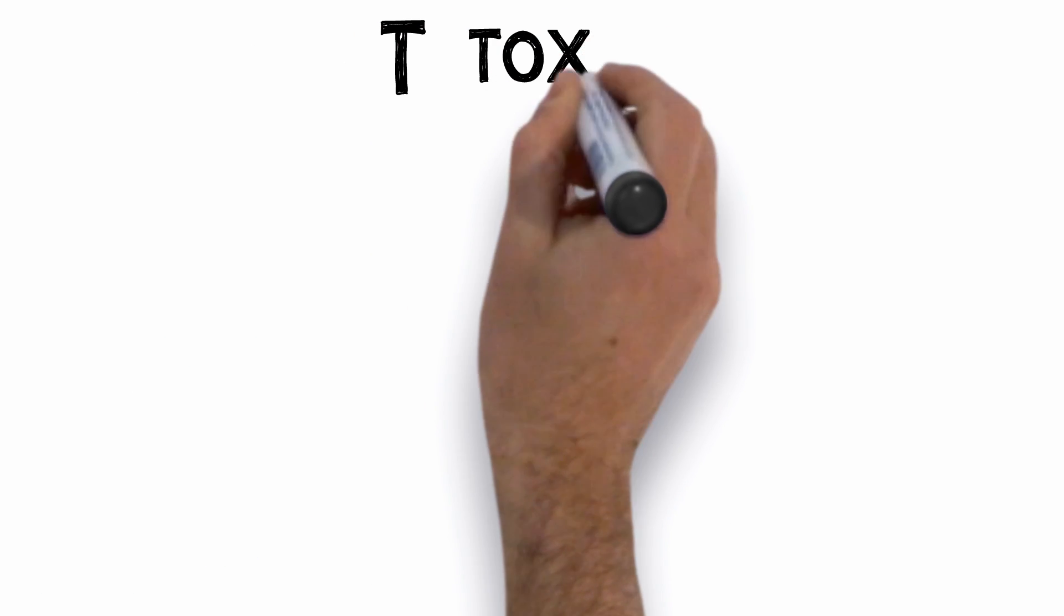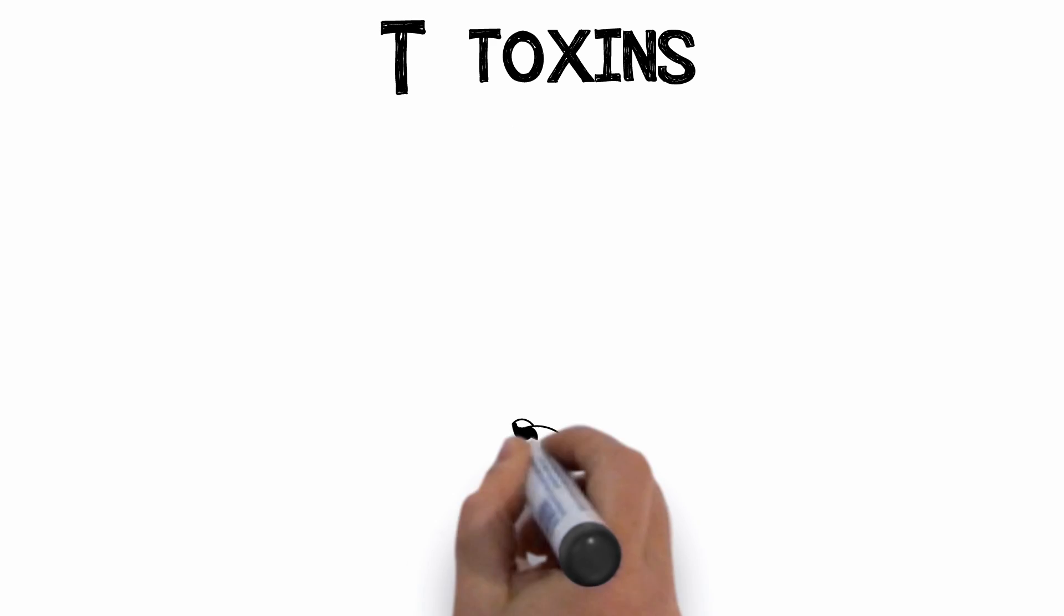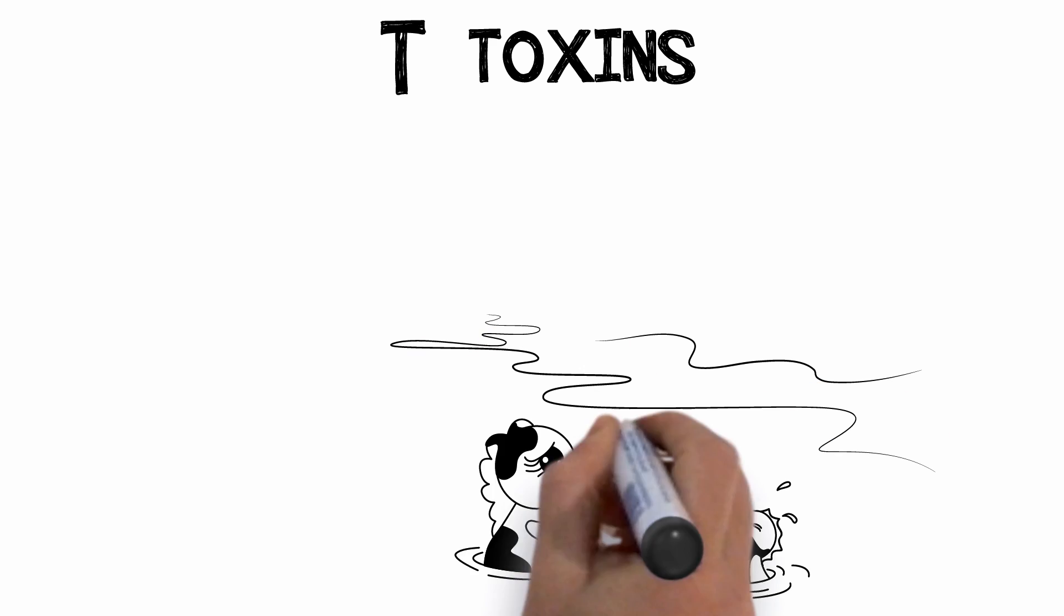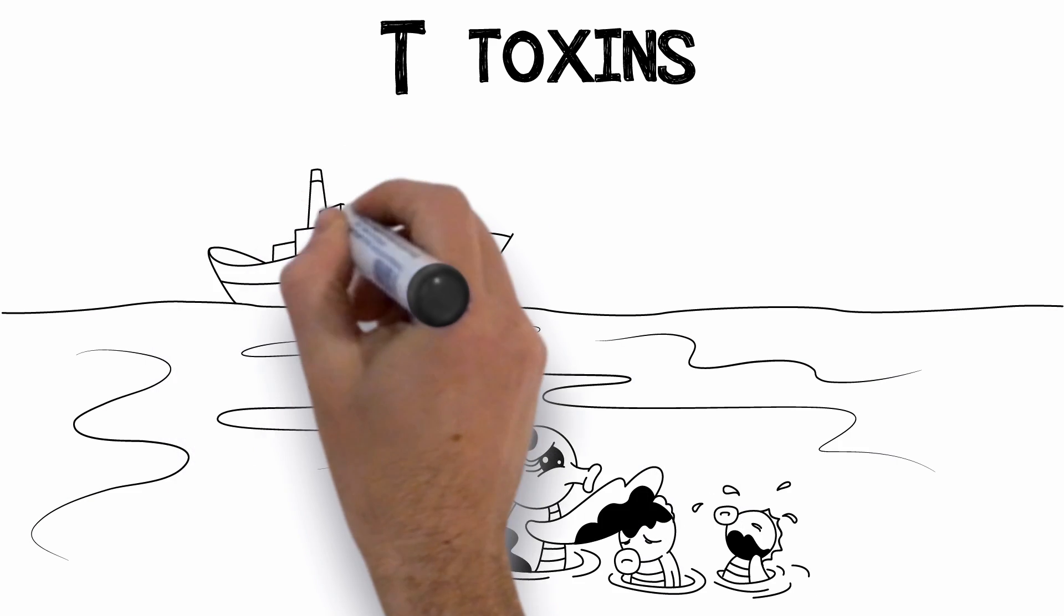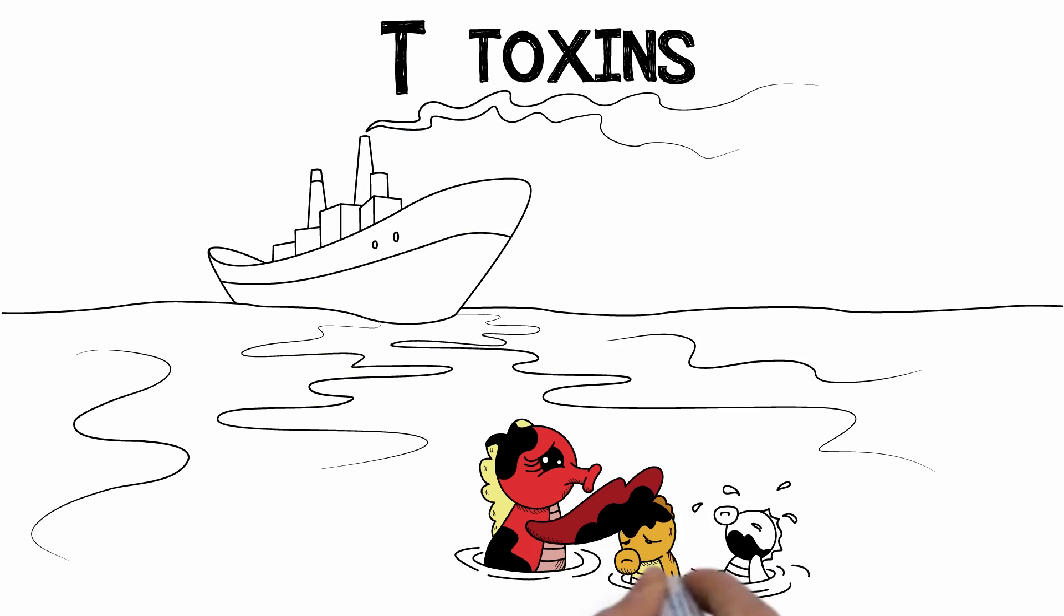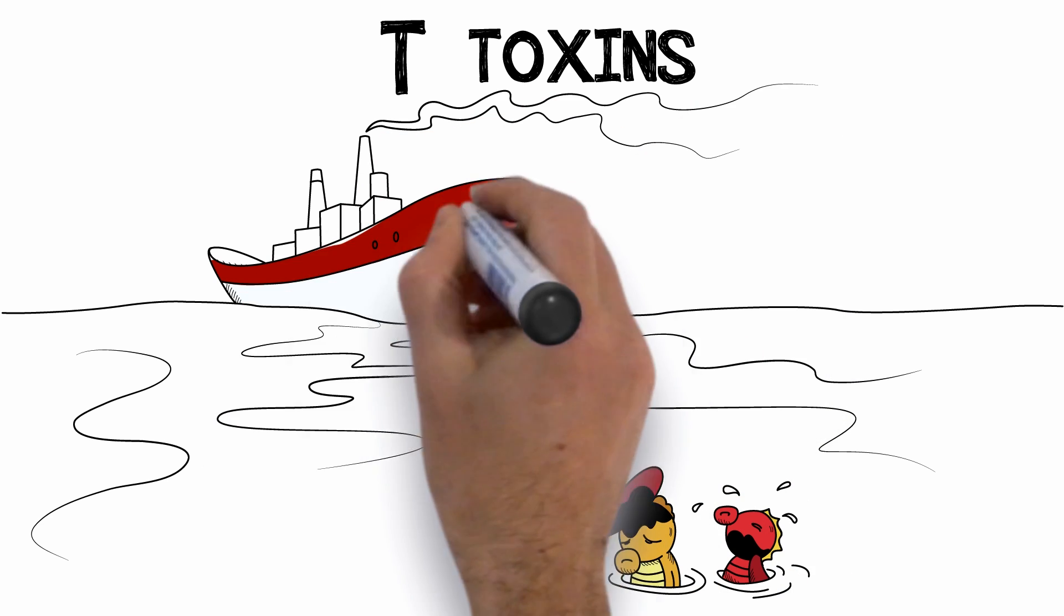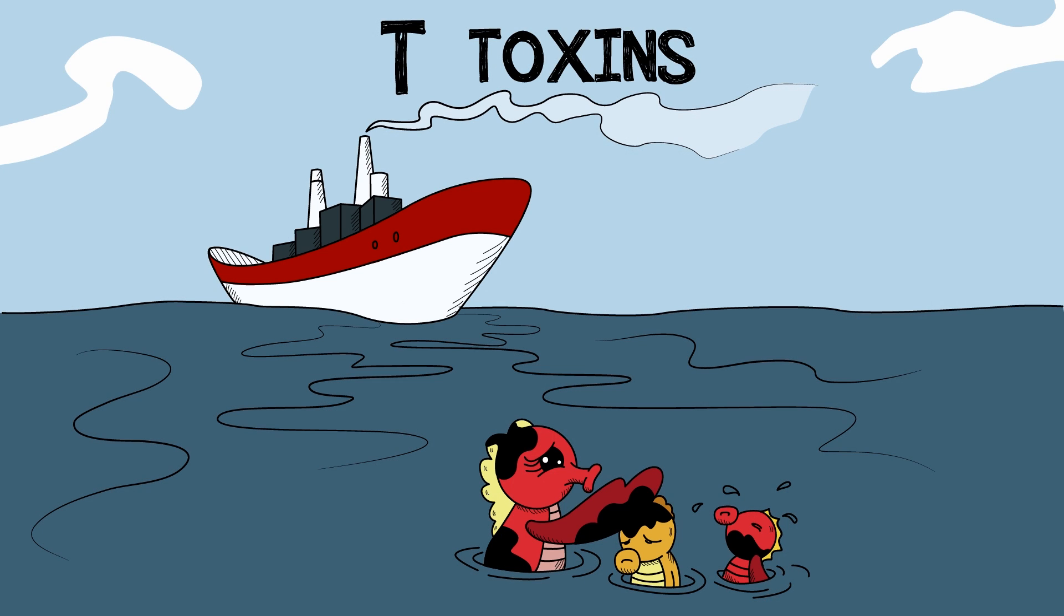T is for toxins. Scarlet noticed that her skin was breaking out more and more in rashes, and she felt foggy-headed ever since there was an oil spill near their home. Her children had rashes too, and they started to struggle more in school.